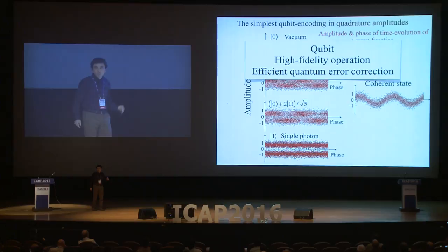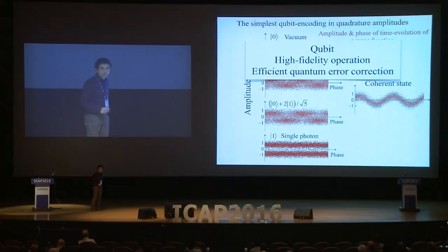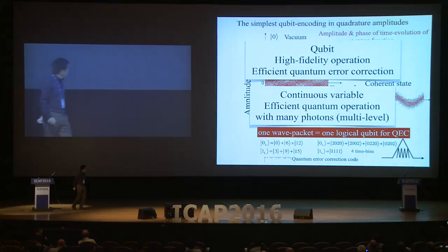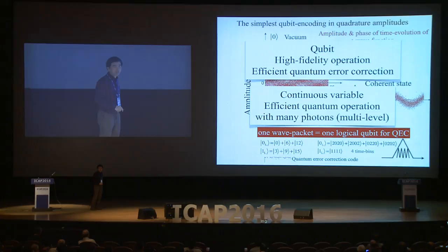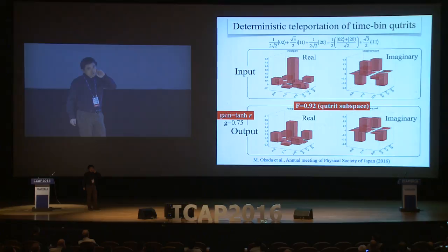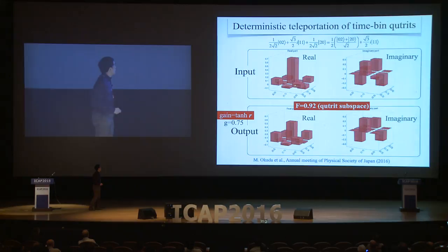The reason why we use this encoding is that with qubit, we can make high-fidelity operations and efficient quantum error correction. With continuous variable, we can make efficient quantum operations with many photons — that means multilevels or qudits. In that case, we can use one wave packet as one logical qubit for quantum error correction. And in that direction, we already succeeded in a deterministic teleportation of time-bin qutrits.